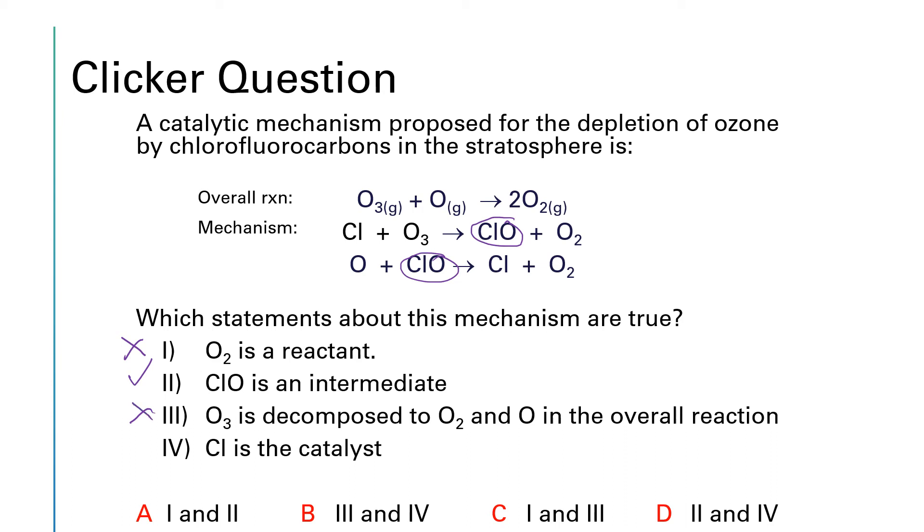And then step number four says that Cl is the catalyst. And yes, Cl first appears as a reactant and then it gets regenerated in the end, making that a catalyst. So Cl is a catalyst. So it looks like answers two and four are correct, which would be answer D.